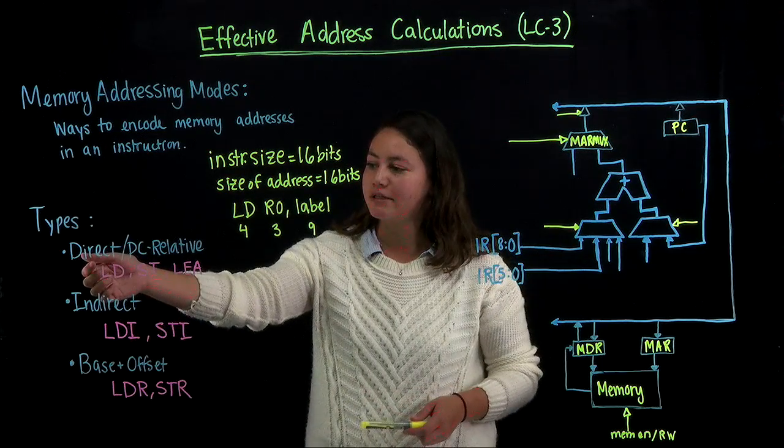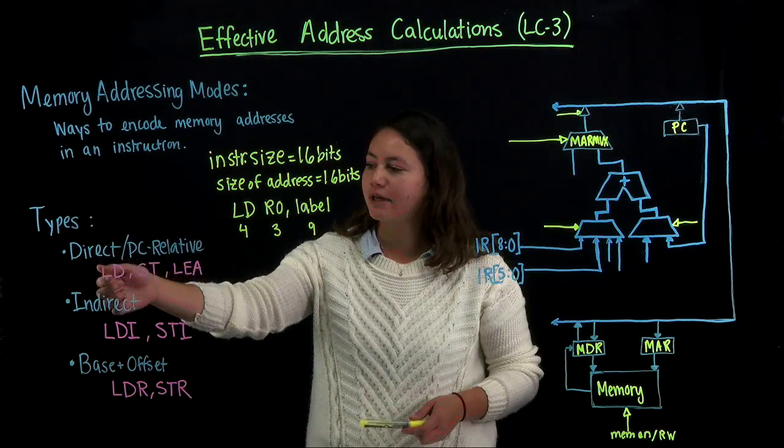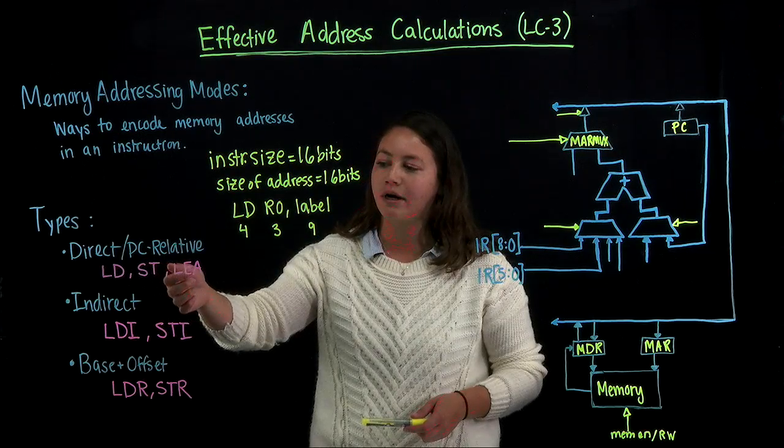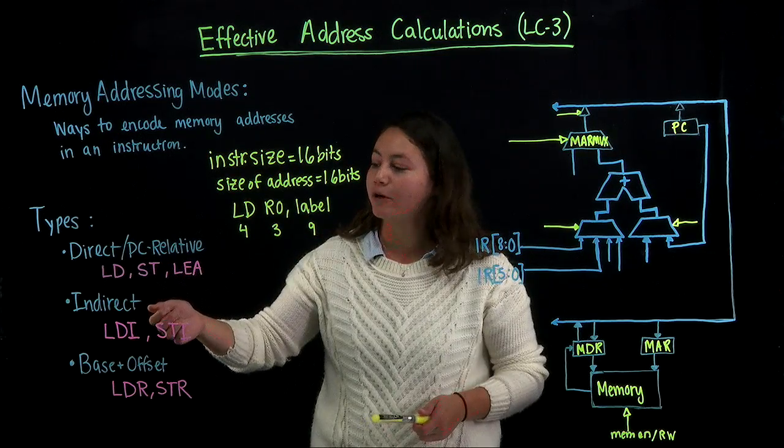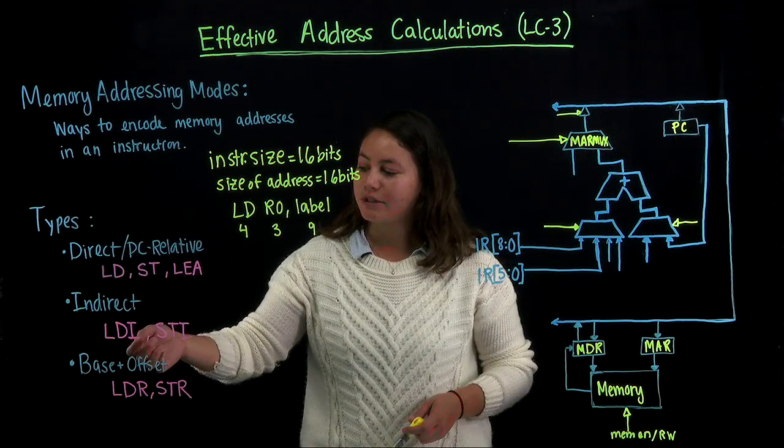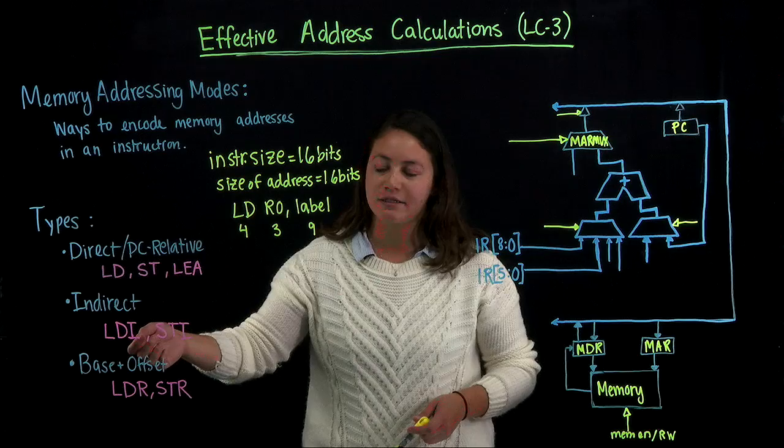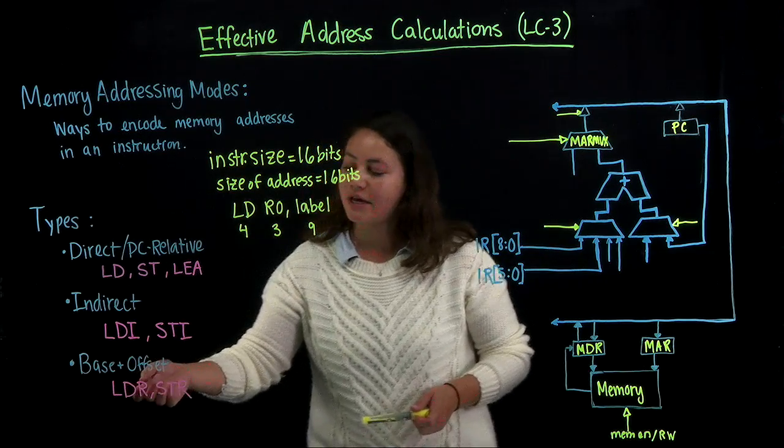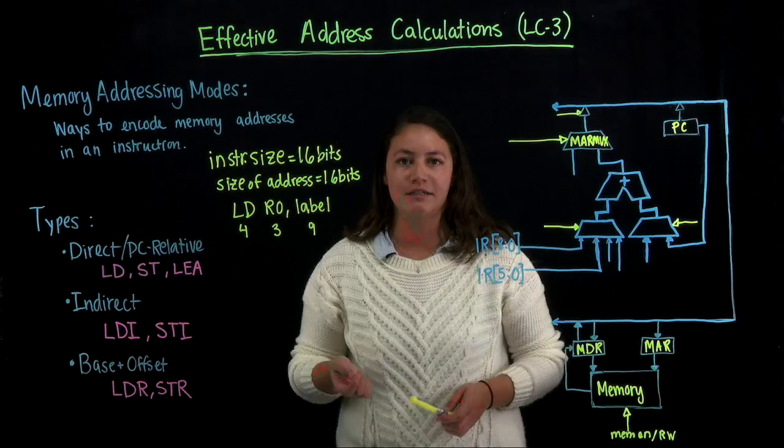So we have direct or PC relative. That's used in load, store, and LEA, and more instructions. And then we have indirect, which is used in LDI and STI. And then we have base plus offset, which is used in LDR and STR.